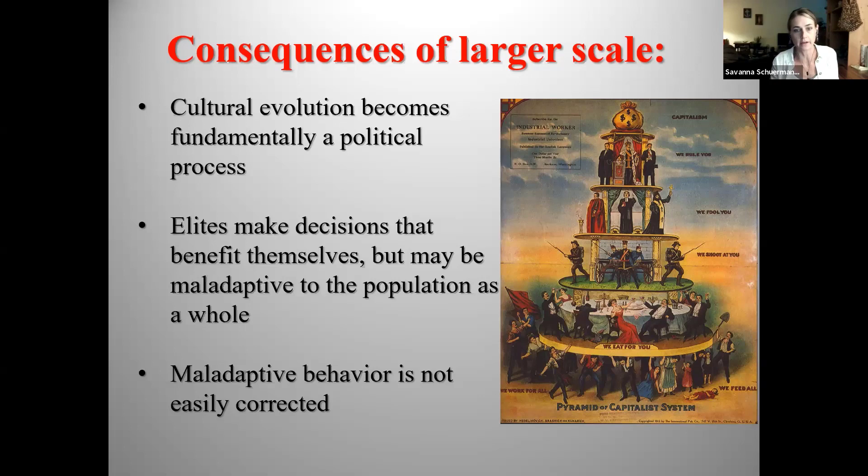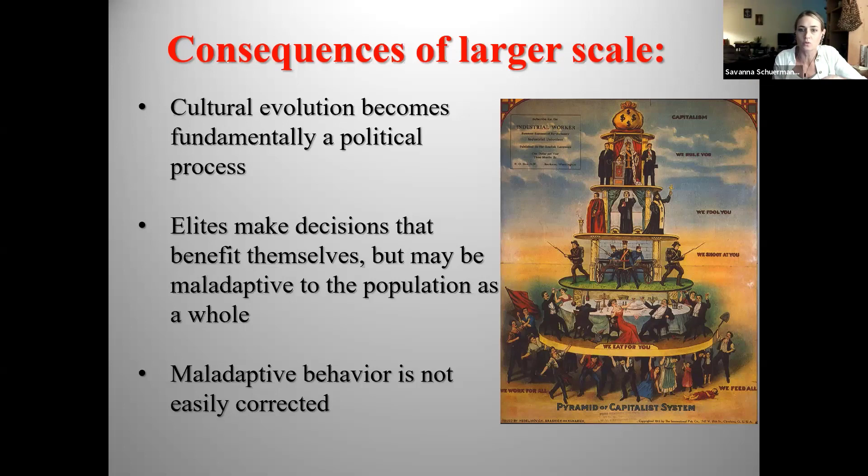That's one example of what it means when elites make decisions that might benefit them but not the rest of us. And this maladaptive behavior is not easily corrected — if you get rid of the Clean Air Act, the Clean Water Act, protected lands, you can't just undo that once those resources have been plundered and polluted.